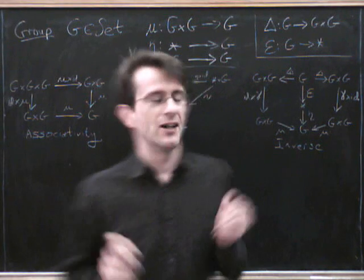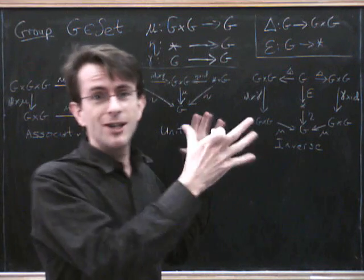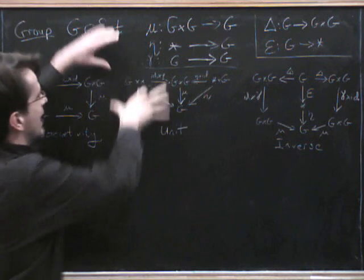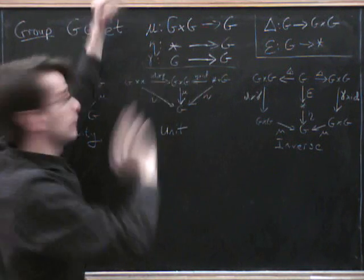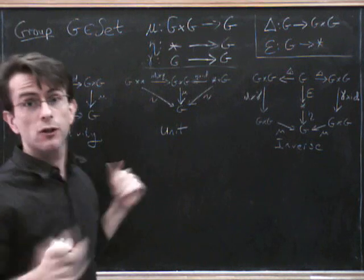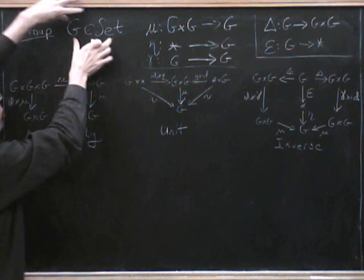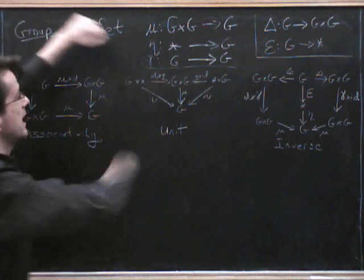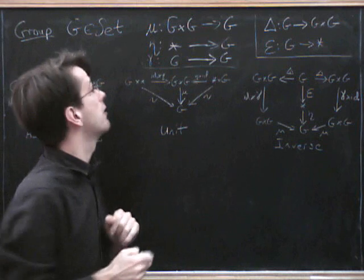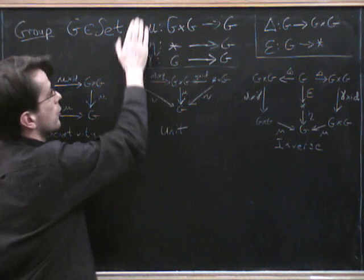Okay, so what we saw last time was how we take the naive definition of a group and give it a categorical flavour. So what is a group? Well, the way we've decided to describe it is it's an object in the category of sets, so it's a set together with certain morphisms. So we've got the multiplication,